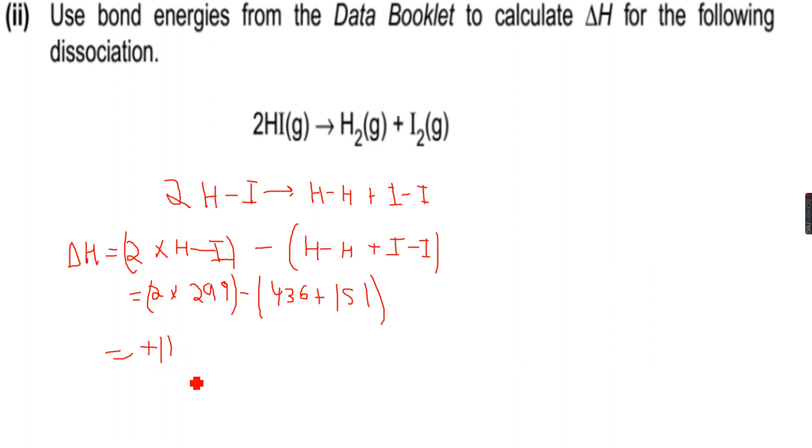So for delta H, I will always have to include a sign because enthalpy change can be positive. So this will be plus 11 kJ per mole. Now we are done with this as well. There are two things I want to discuss with you before we end this presentation. The first thing is that the bond energies we are using from the data booklet, they are average bond energies.